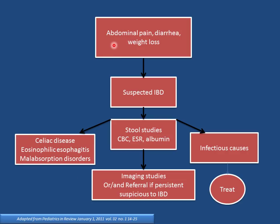Clinical approach to a child with abdominal pain, diarrhea, and weight loss: chronicity makes IBD more likely than infectious causes. If IBD is suspected, perform stool studies, CBC, ESR, and albumin. If positive for infectious causes, treat accordingly. If not suggestive of IBD, evaluate for celiac disease, eosinophilic esophagitis, or malabsorption disorders. If suggestive of IBD (elevated ESR, hypoalbuminemia, anemia), proceed with imaging and referral to pediatric gastroenterology.